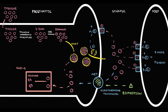Bupropion inhibits the function of the norepinephrine transporter. With inhibition of NET, the reuptake of norepinephrine into the presynaptic neuron decreases, so more norepinephrine molecules remain in the synapse. These norepinephrine molecules begin to bind to adrenergic receptors, additionally stimulating them. With time, because the norepinephrine transporter is now blocked, even more norepinephrine molecules accumulate in the synapse. The higher the amount of norepinephrine molecules in the synapse, the higher the stimulation of adrenergic receptors.